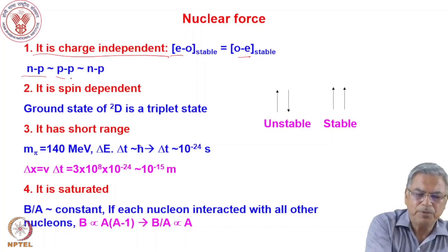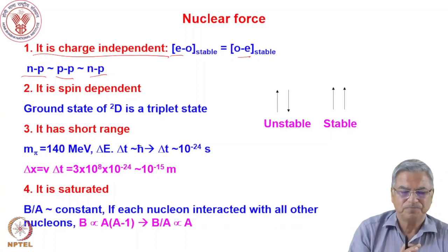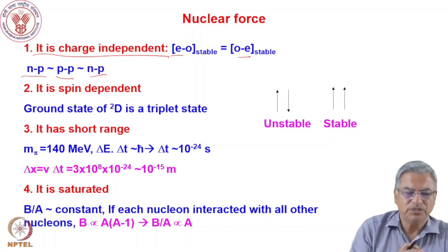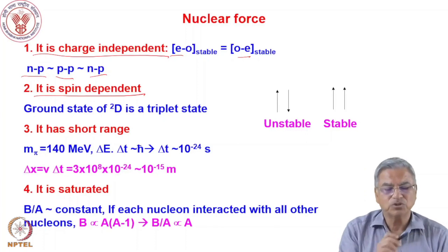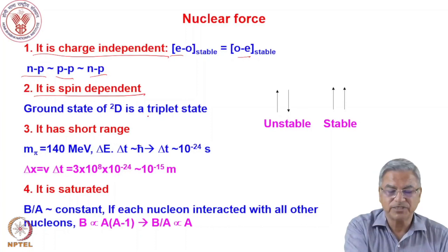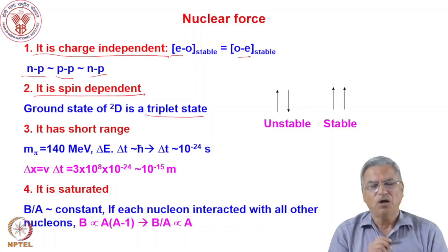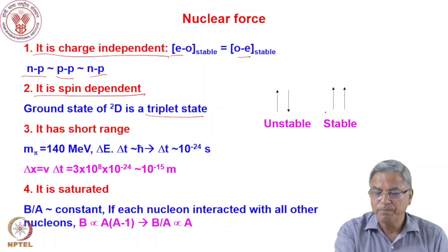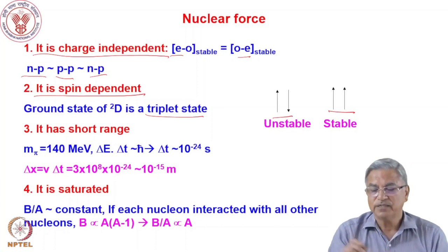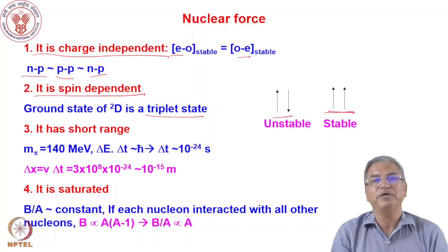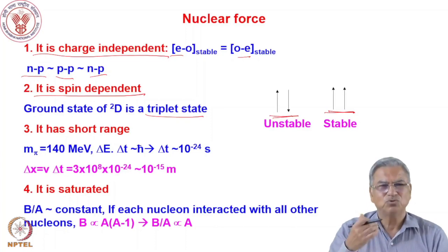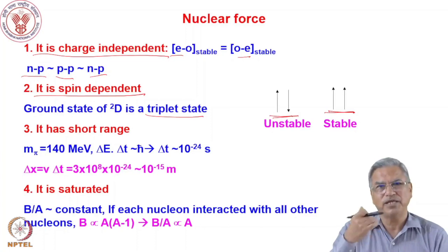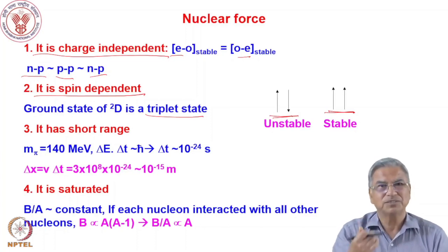The second property of nuclear force is that it is spin dependent, and the evidence for this came from the ground state of deuterium. The ground state of deuterium is a triplet state. Deuterium has one proton and one neutron; the proton and neutron can be paired or unpaired. What is found is that the ground state is paired (triplet), while the unpaired state is unstable. This means that depending on the spin state of the two nucleons, the nucleus can be stable or unstable — giving us the idea that the nuclear force is spin dependent.